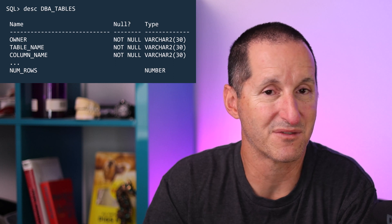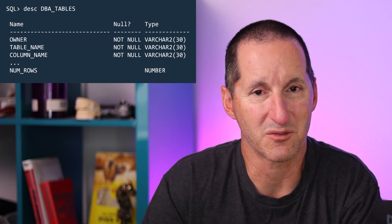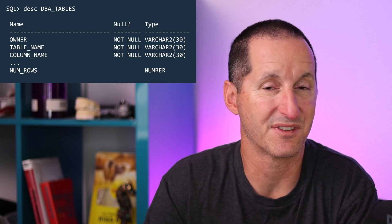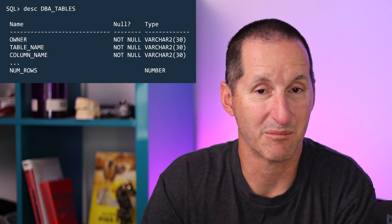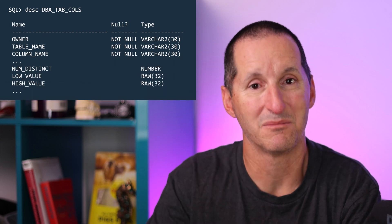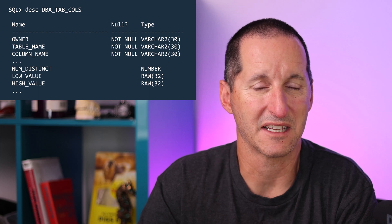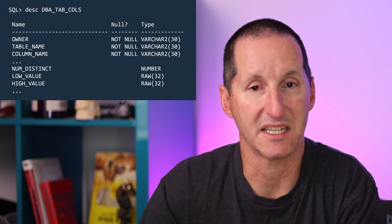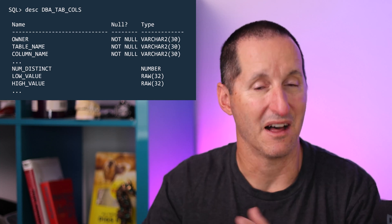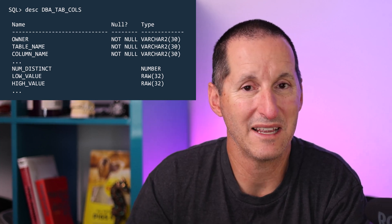If I look at DBA_TABLES for a given table, one of the key things we collect is the number of rows in the table. If I look at DBA_TAB_COLUMNS, then for each column of each table, I need to gather things like what's the lowest value, what's the highest value, what's the number of distinct values. There are plenty of other stats we collect along the way, but let's focus on those ones because this is critical to why you need to go with the defaults for certain operations in DBMS_STATS.